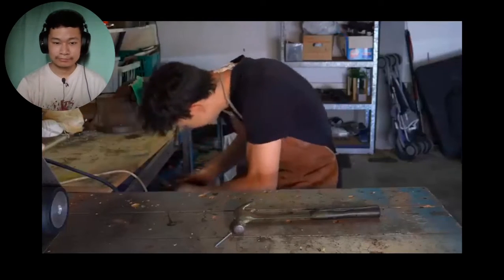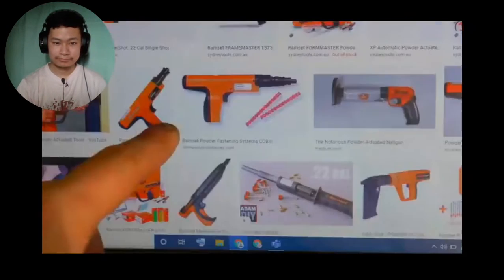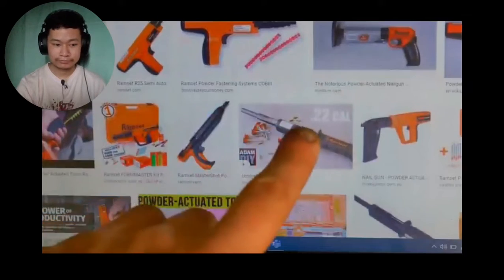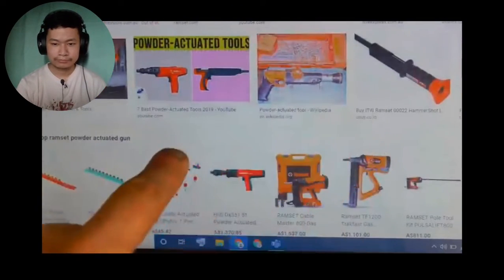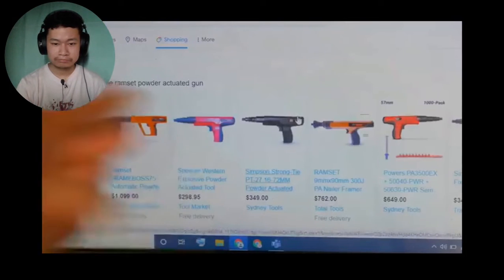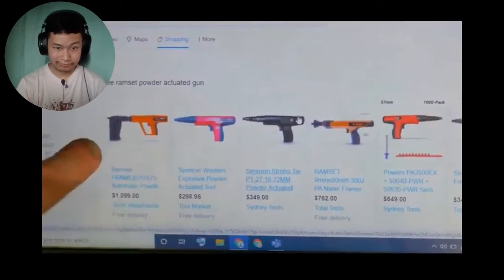Now some of you probably already know I'm not the first to copy the Mexicans with explosive hammers. An Australian company, Ramset, beat me to it making this, which is used to drive nails through brick and metal. And I could just buy one of these, but look at that price. A thousand dollars. I'm definitely better off making my own.